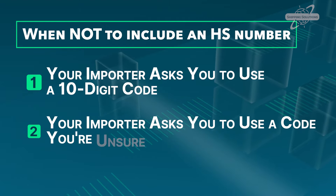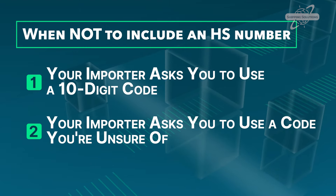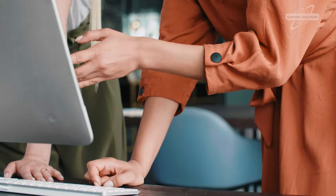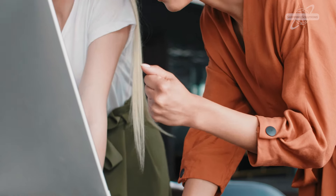Reason number two: your importer asks you to use a code you're unsure of. Sometimes finding the correct HS number isn't easy, and there may be some disagreement between you and your customer about the correct classification. Your customer might have a valid reason for wanting you to use a different code, or they might want you to use a different HS number simply to get a lower duty rate. If you know or believe an HS number is incorrect and use it anyway, you're committing fraud.